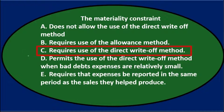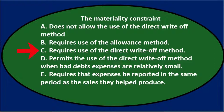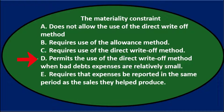C says it requires the use of the direct write-off method, which intuitively doesn't make sense because the allowance method is typically considered the preferred method. So if any method were required, it would be the allowance method — C doesn't sound good. D says it permits the use of the direct write-off method when bad debt expenses are relatively small, which gives a qualification. E says it requires that expenses be reported in the same period as the sales they helped produce, and that sounds familiar too.